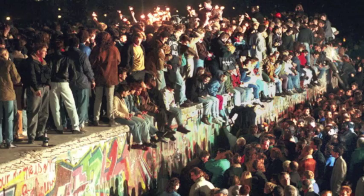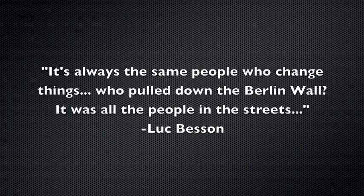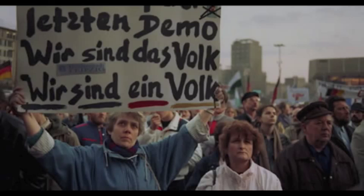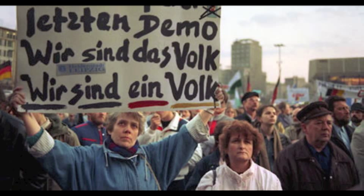It's always the same people who changed things. Who pulled down the Berlin Wall? It was all the people in the streets. The Berlin Wall had fallen, and the citizens of Germany changed their slogan: "Wir sind das Volk" — "we are the people" — changed to "Wir sind ein Volk" — "we are one people."